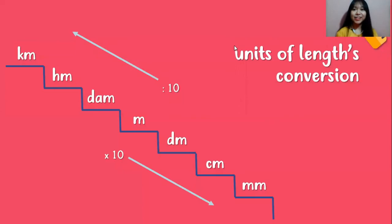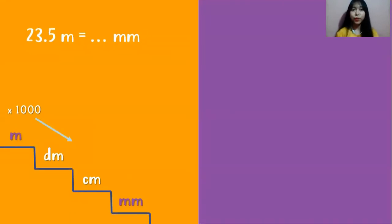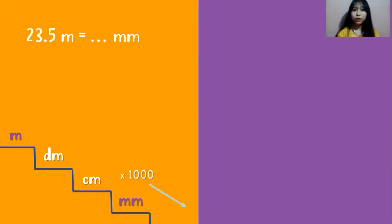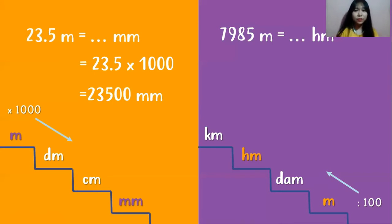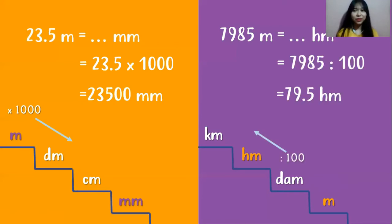Let's try some exercises using the unit conversion staircase. First, I have 23.5 meters and would like to convert it into millimeters. From meter to millimeter, we go three steps downward, so we multiply 23.5 by 1,000. The answer is 23,500 millimeters. Next, I would like to convert from 7,950 meters into hectometers. From meter to hectometer, we go two steps upward, so we divide by 100. The answer is 79.5 hectometers. Quite easy, right?